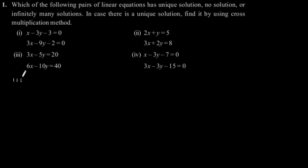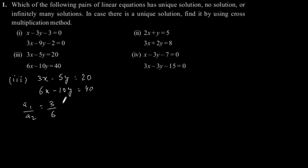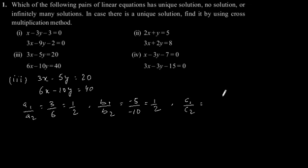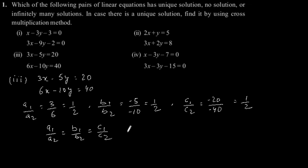Third is: 3x minus 5y is equal to 20 and 6x minus 10y is equal to 40. So a1 by a2 is equal to 3 by 6, which is equal to 1 by 2. b1 by b2 is equal to minus 5 by minus 10, which is equal to 1 by 2. And c1 by c2 is equal to minus 20 by minus 40, which is equal to 1 by 2. So here we have a1 by a2 is equal to b1 by b2 which is equal to c1 by c2.